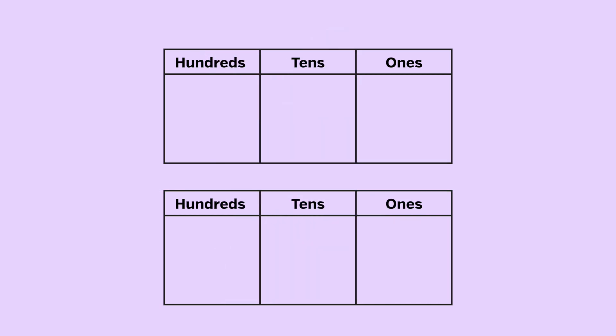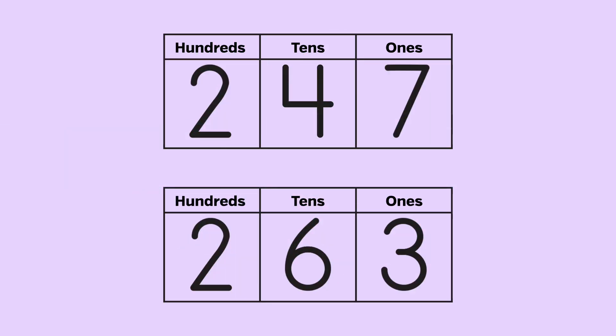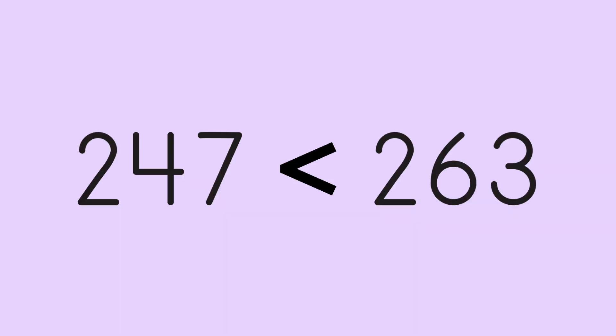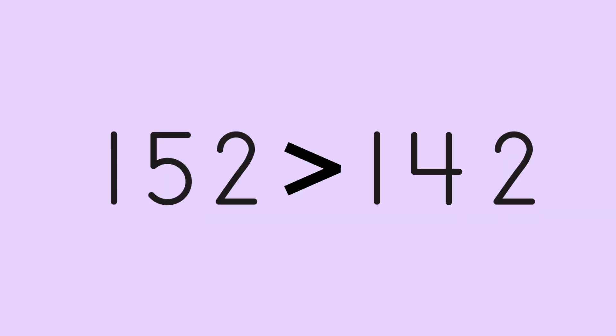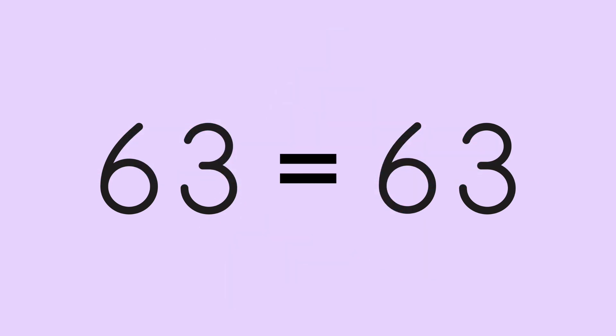When comparing larger numbers, start on the left and compare each place. Once the numbers are not the same, as you move from left to right, you have your answer. 247 is less than 263. 152 is greater than 142. 63 and 63 are equal.